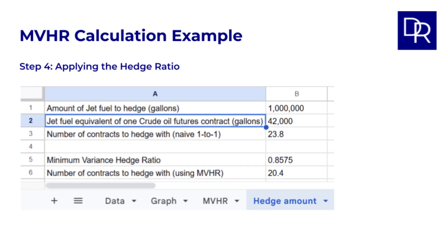Imagine an airline needs to hedge 1 million gallons of jet fuel. One crude oil futures contract is for 1,000 barrels of crude oil, which roughly corresponds to say 42,000 gallons of jet fuel equivalent. I should point out that this is a simplified example. The actual conversion is more complex. So, then to hedge 1 million gallons of jet fuel, using a naive 1 to 1 hedge, you might think you need to sell around 24 crude oil futures contracts. 1 million gallons of jet fuel divided by 42,000 gallons per contract, which gives 23.8.